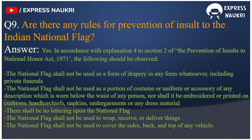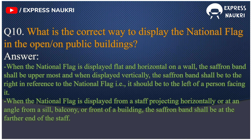Question 10: What is the correct way to display the national flag in the open on public buildings? Answer: When the national flag is displayed flat and horizontal on a wall, the saffron band shall be uppermost. When displayed vertically, the saffron band shall be to the right — that is, to the left of a person facing it. When displayed from a staff projecting horizontally or at an angle from a sill, balcony or front of a building, the saffron band shall be at the farther end of the staff.